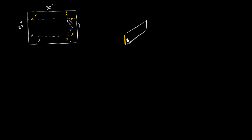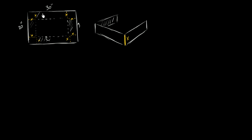So this distance right over here is x. If I were to fold this flap right over here up, and then fold that back flap up, and then fold this flap over here up — this whole region right over here of my piece of cardboard would be the floor of this box. What I want to do is maximize the volume of this box — maximize how much it can hold — by picking x appropriately.